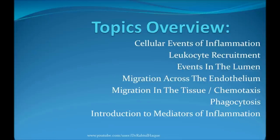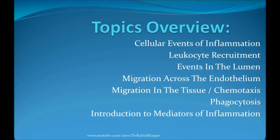In this video we will discuss the cellular events of inflammation, which will include leukocyte recruitment, events in the lumen, migration of the leukocytes across the endothelium, and migration in the tissue, also known as chemotaxis. We will also briefly discuss phagocytosis — I have a separate video entirely on phagocytosis. At the end we will also discuss some introductory points about the mediators of inflammation. So, a lot of topics — let's begin.